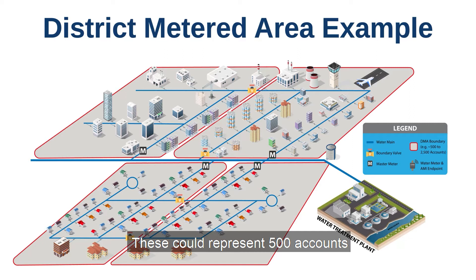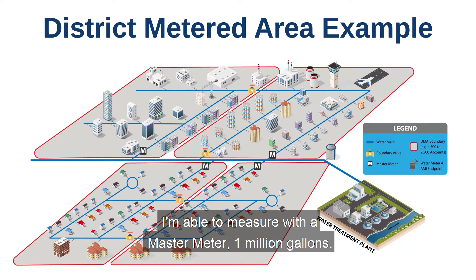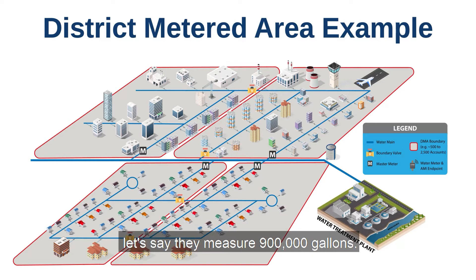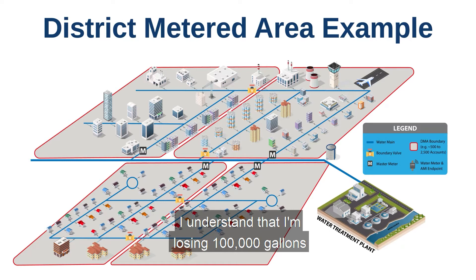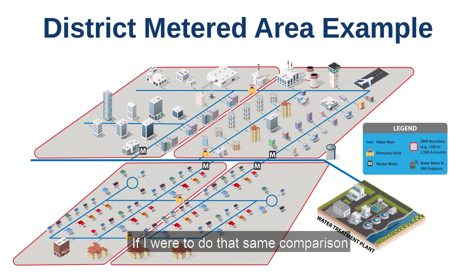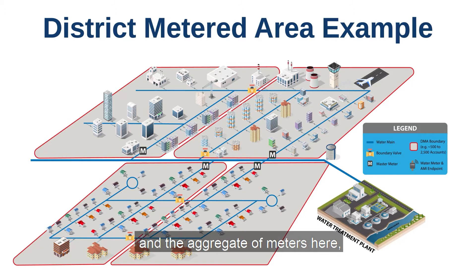These sizes could vary — these could represent 500 accounts or 5,000 accounts. Let's say within a week's time in one of these areas, the master meter measures 1 million gallons, but the aggregate of 500 homes in that area measures 900,000 gallons. That means we're losing 100,000 gallons either through meter inaccuracy or leaks in the system. By doing this comparison across all four areas, whichever one has the largest discrepancy between the master meter reading and the aggregate of meters is where we'll focus and concentrate our leak detection efforts.